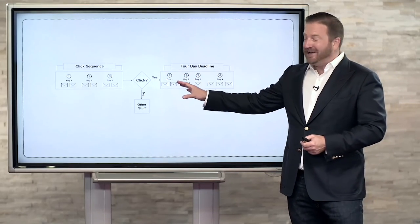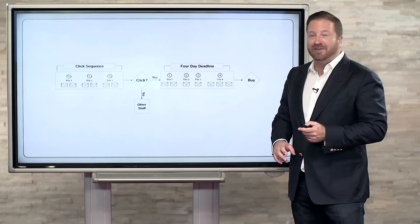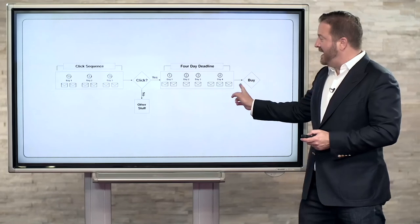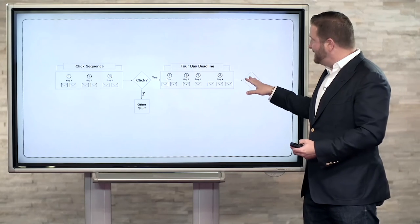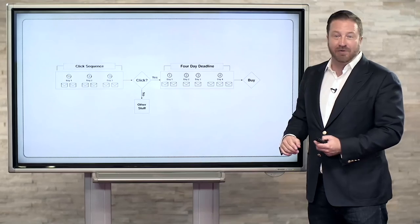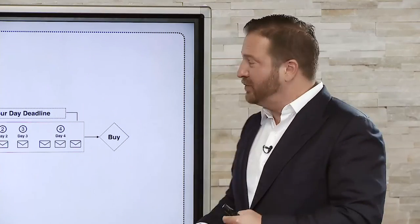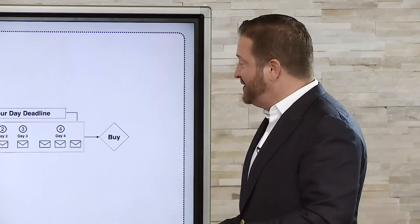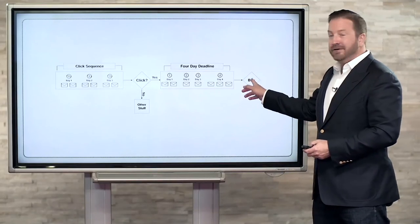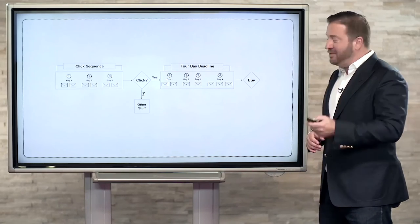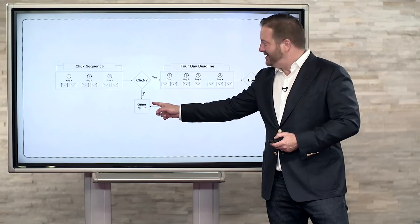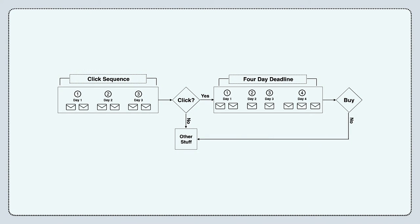At the end of this sequence — or at any time during it — they can buy. If they buy from any email, we're not going to send them the remaining emails. Immediately upon purchase, they're taken out of the sequence automatically. If they don't buy, they're back down in the 'other stuff' column — we'll just send them another promotion later. But for now, let's focus on this four-day cash machine promo.